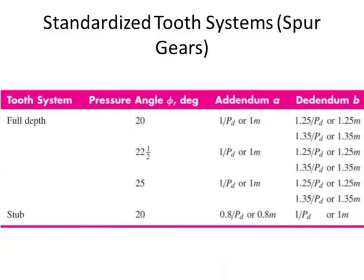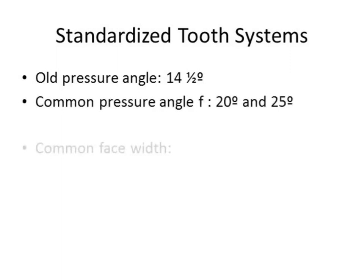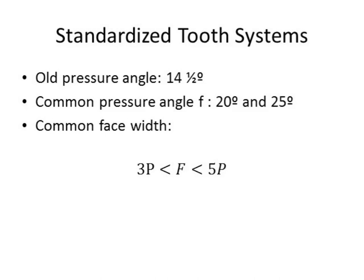For the standardized tooth system for spur gears with full-depth teeth, the pressure angle can be between 20° and 25°. Depending on the angle, the addendum and dedendum values are given in a standard table — for example, for a 20° angle, the addendum is 1 module and the dedendum is 1.25 modules. For stub teeth, the angle is 20°. The older 14.5° angle has been replaced by 20° to 25°. The face width should satisfy 3P to 5P (diametral pitch) or the equivalent in terms of circular pitch.